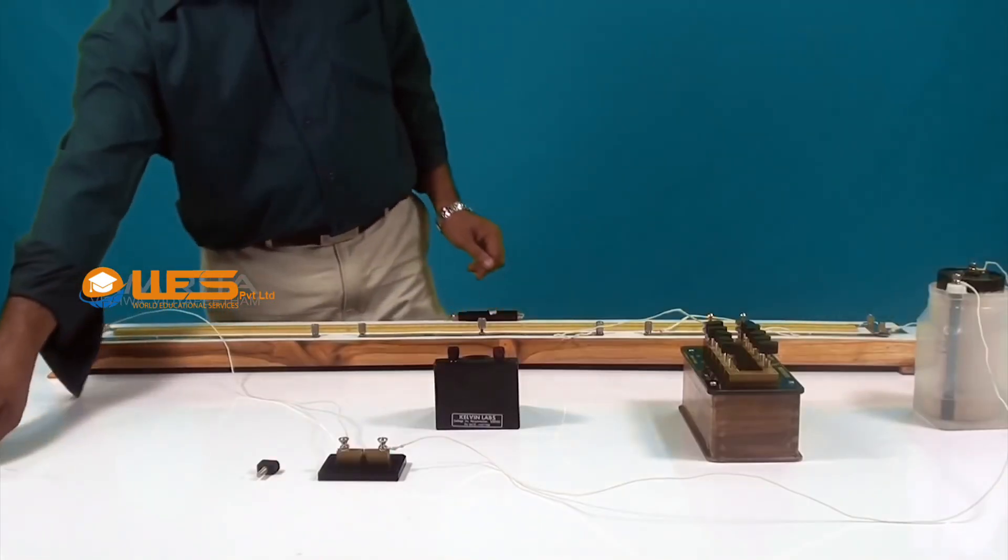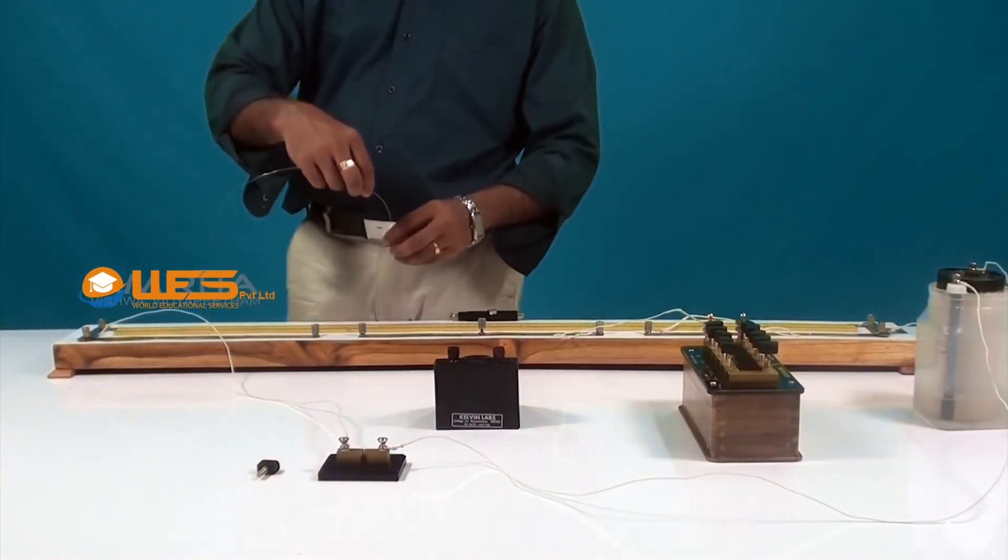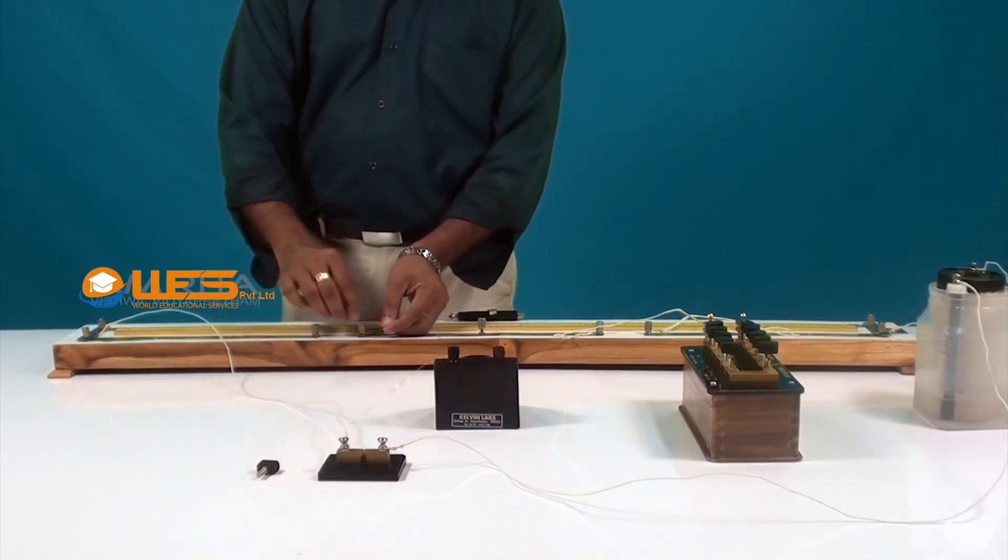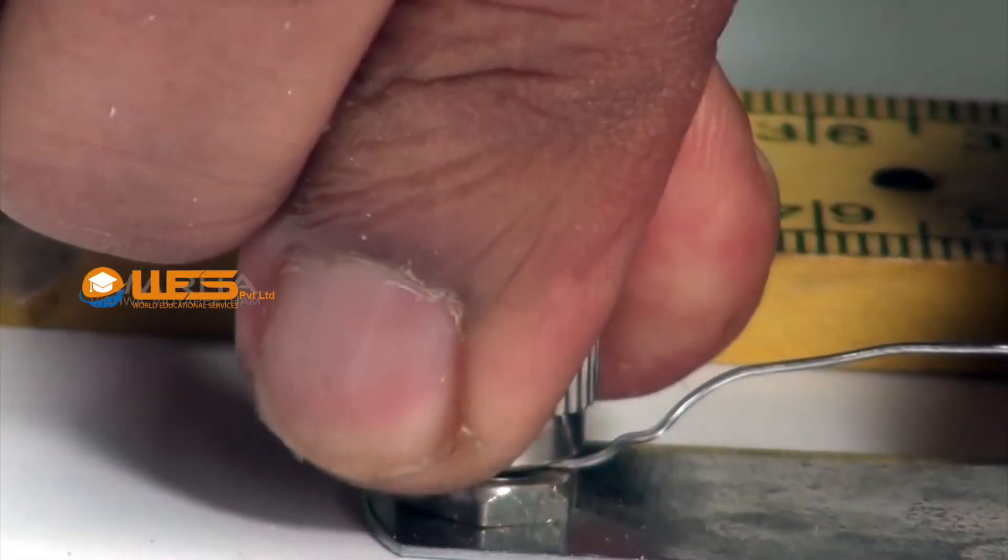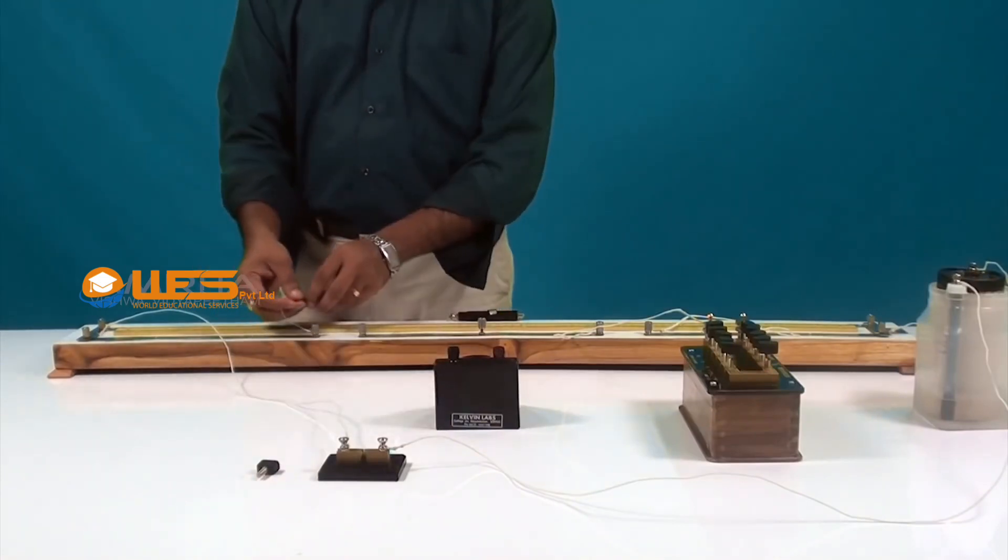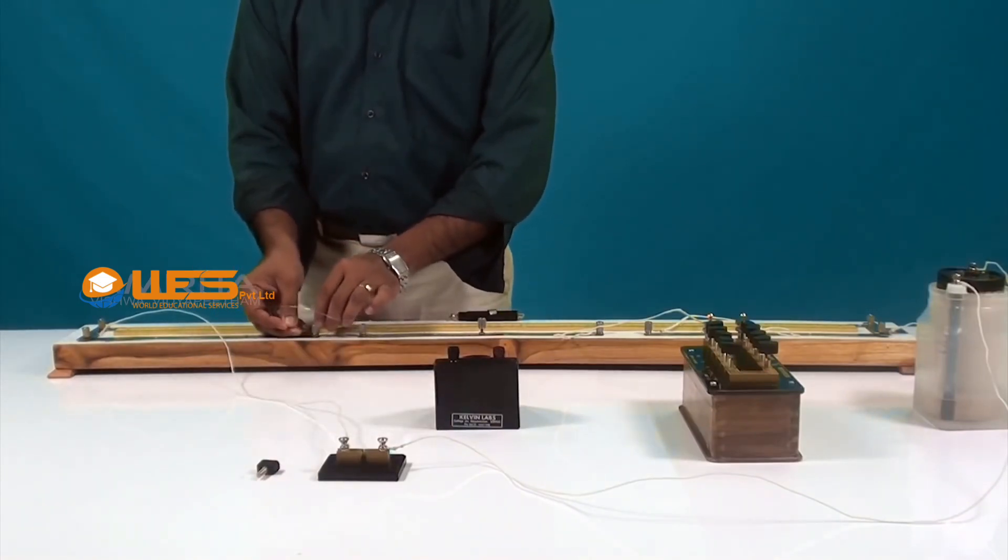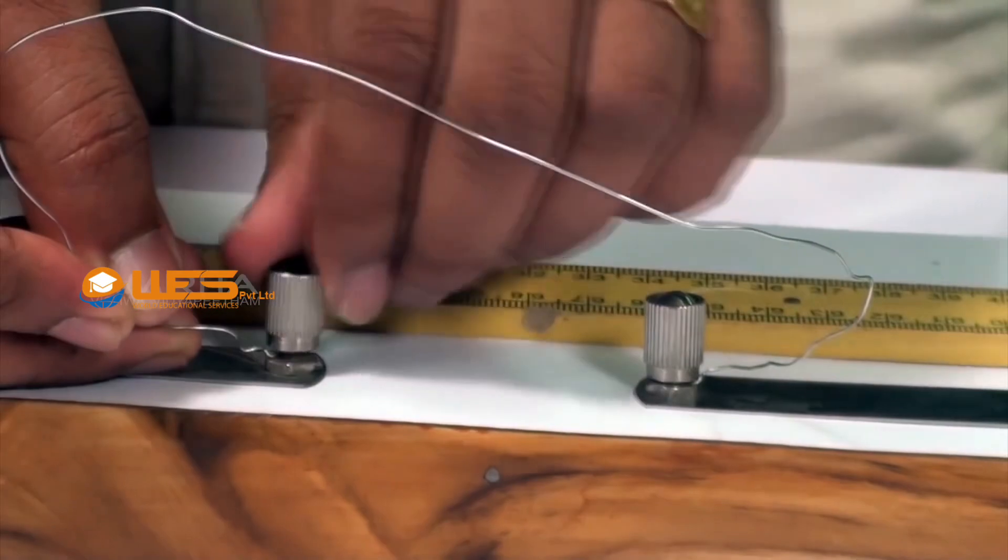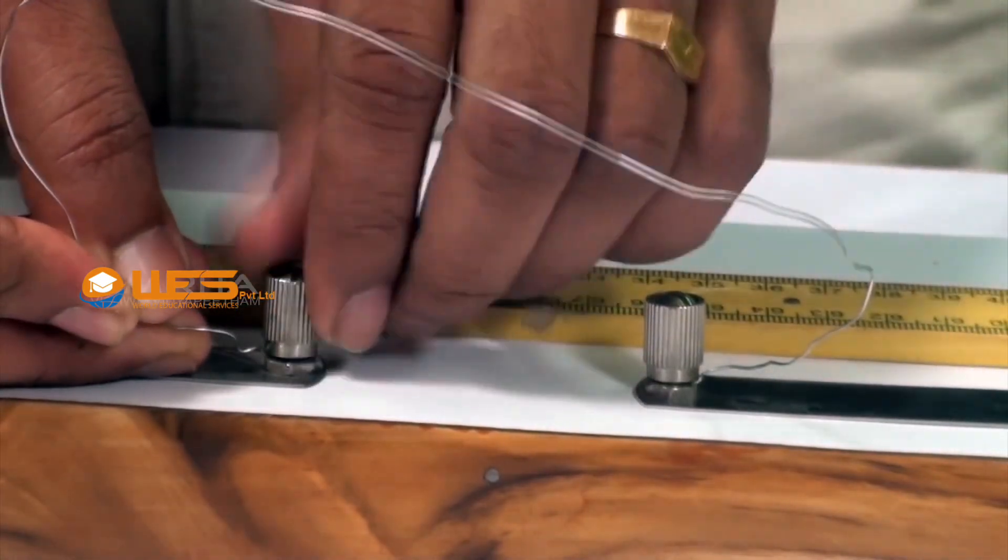Then, take a resistance wire R1 and connect it to gap G2 of the meter bridge. Since the resistance of the wire depends on its length, make sure that both ends of the resistance wire just touch the gap.